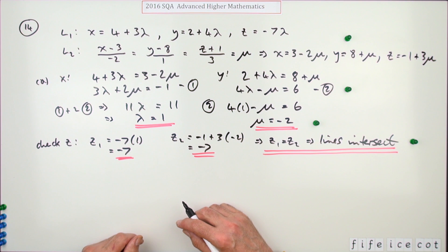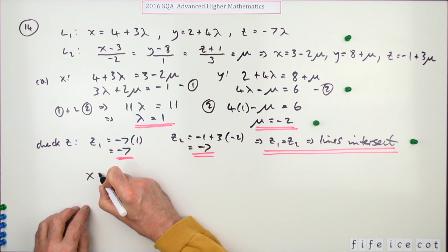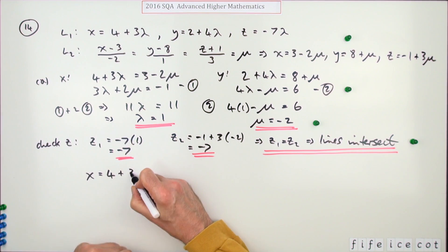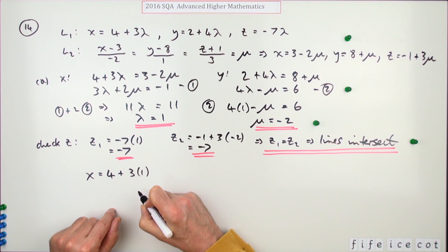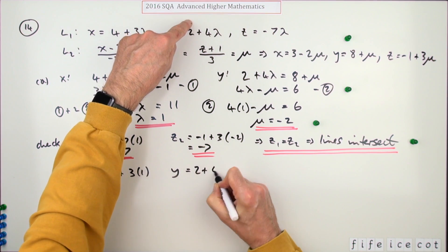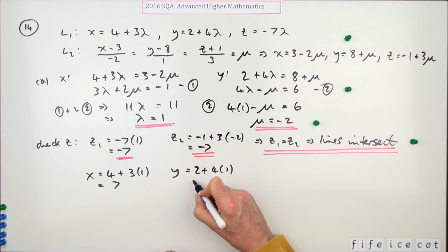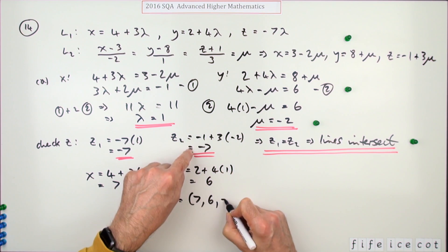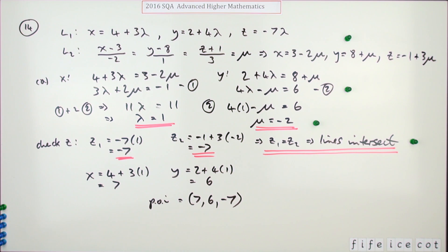Now it's just a case of getting the x and y coordinates, and then you can state the point of intersection. You can choose either of them. For x, I'll use this one: 4 plus 3 times 1, which is 7. y equals 2 plus 4 times 1, which equals 6. I've already got z, so that means the point of intersection is 7, 6, negative 7. Doing that gets you the fifth mark.